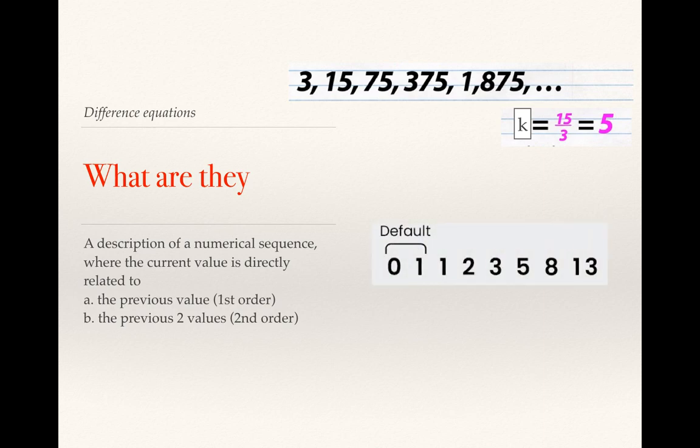In this case we have a Fibonacci series, and the Fibonacci series is obtained by adding the previous two terms together to get the current term. So it's a second order difference equation.